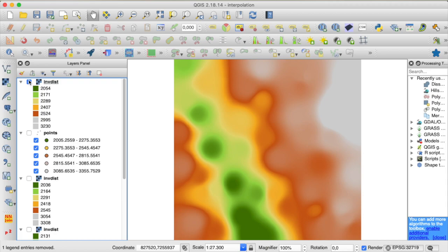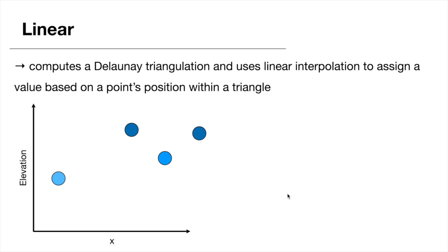Let me show you one more interpolation algorithm: linear interpolation. What happens when we use GDAL grid with the linear interpolation algorithm is that a Delaunay triangulation is calculated for our sample data, and then for every grid node we find its position within the corresponding Delaunay triangle and use linear interpolation to estimate a value. To explain further: imagine we have sample points with an x coordinate and an elevation value — just two dimensions to start simple.